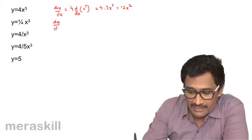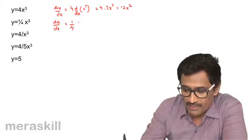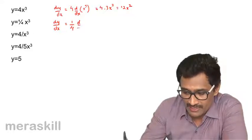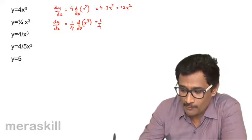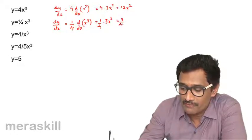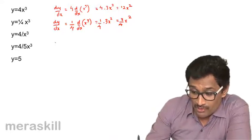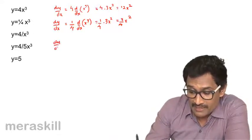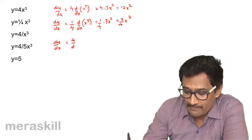Here, dy/dx will be (1/4) · d/dx of x³, which is (1/4) · nx^(n-1) = (1/4) · 3x² = (3/4)x².